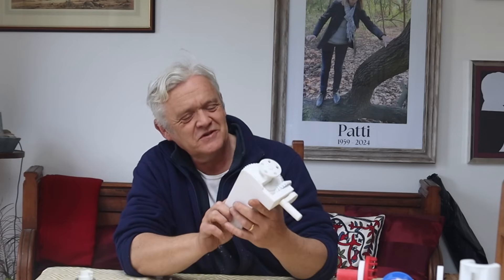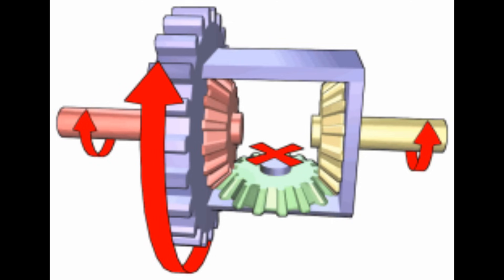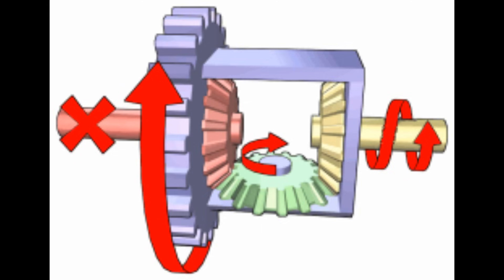This is a Towson differential made in video 2309, and it could be argued that this is the height of differential development. Differentials have two jobs: they can combine power from two shafts and output to one shaft, or they can take power from one shaft and split it across two shafts. That's what helps turn a car around a corner when the wheels are traveling at different speeds, so they're essential to automotive.